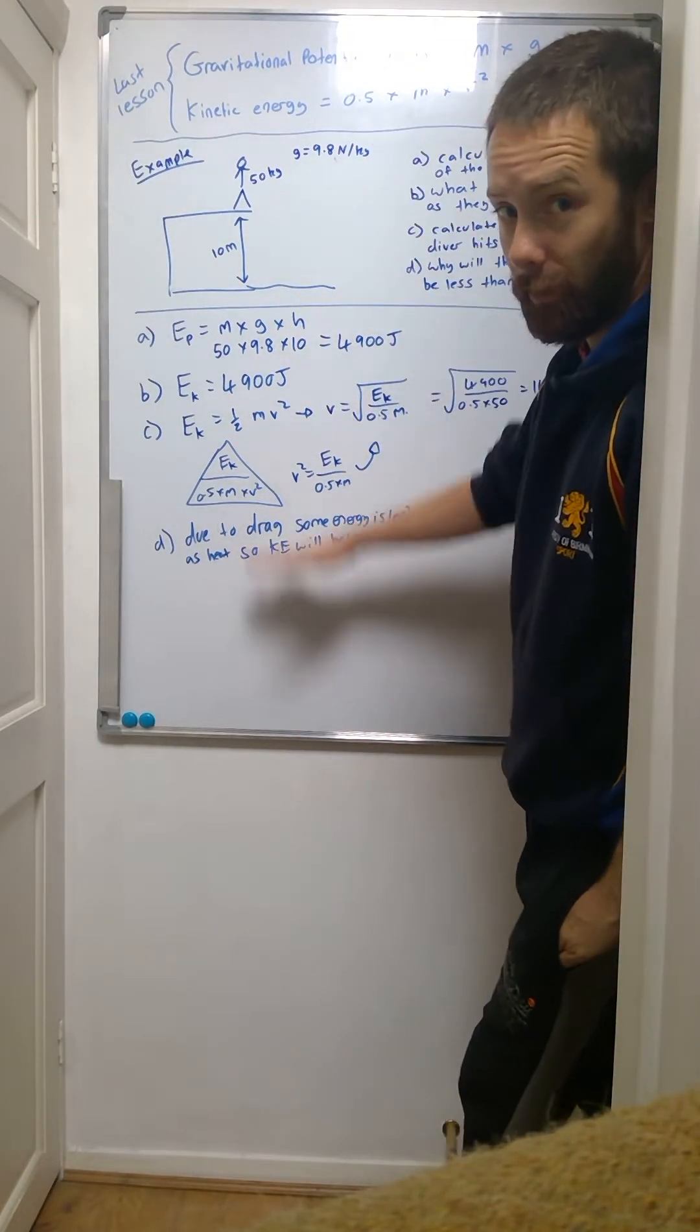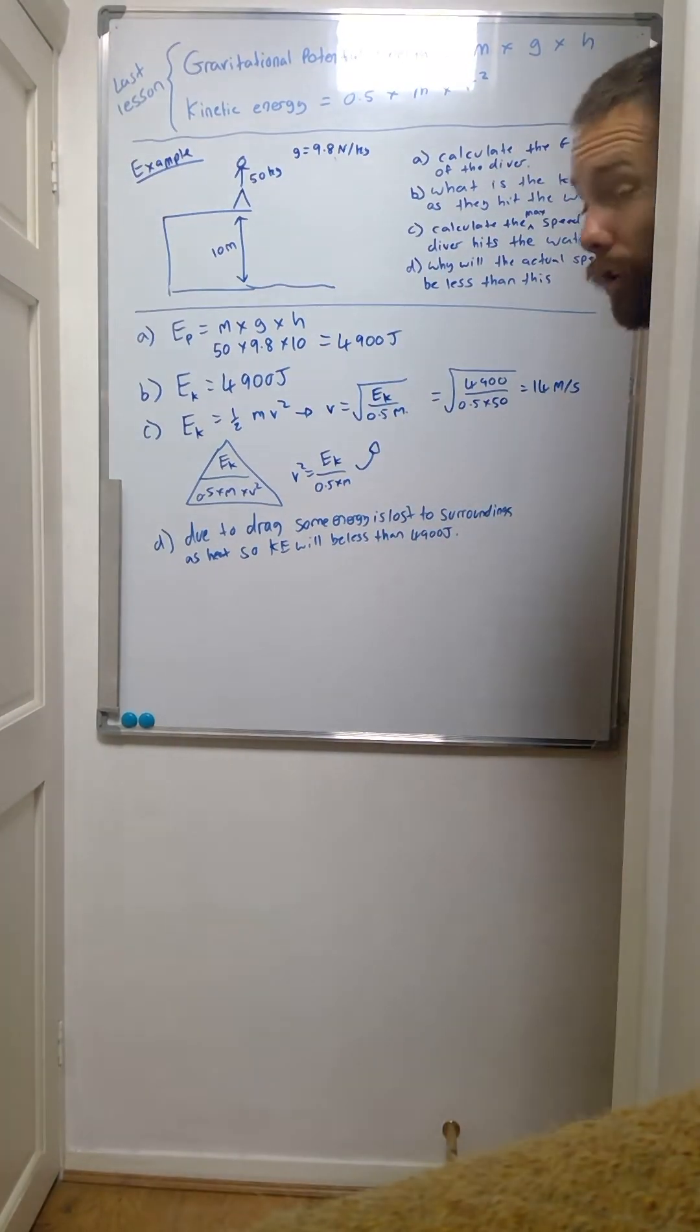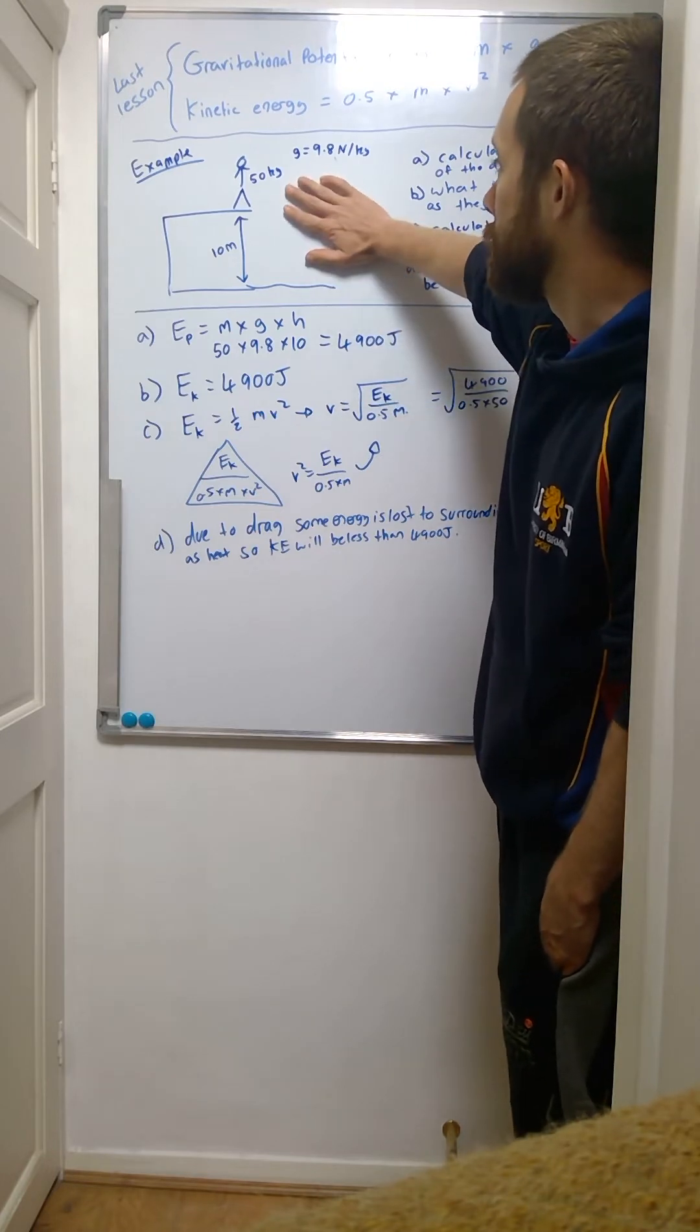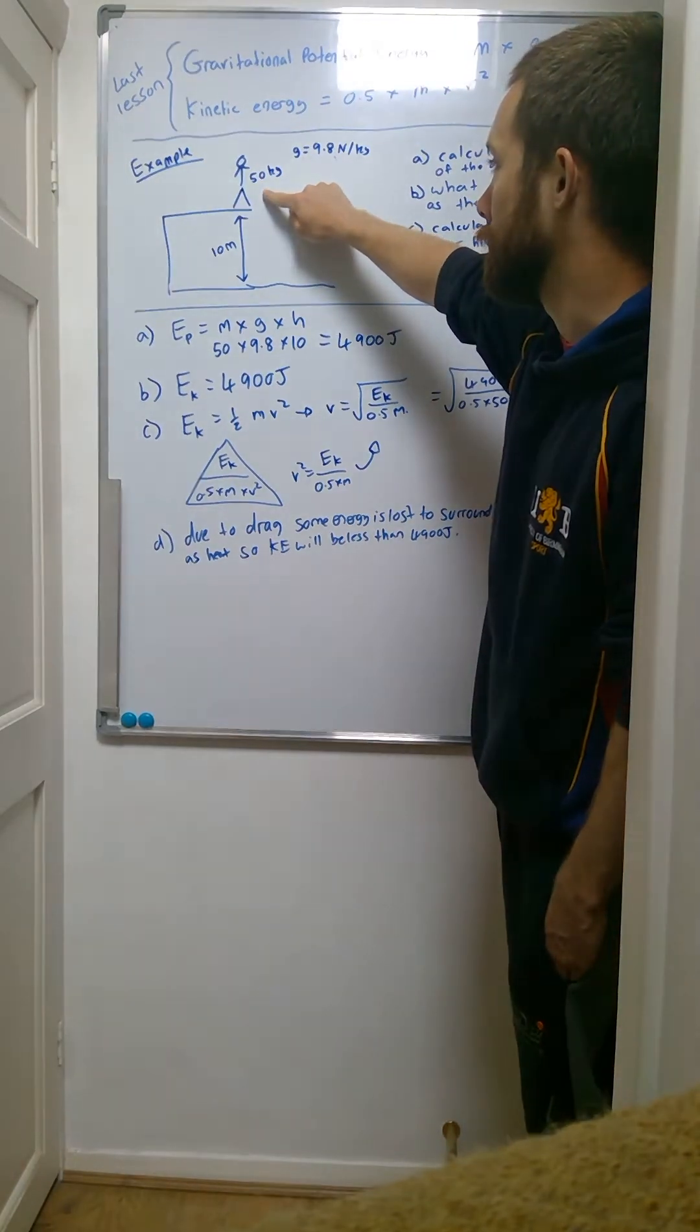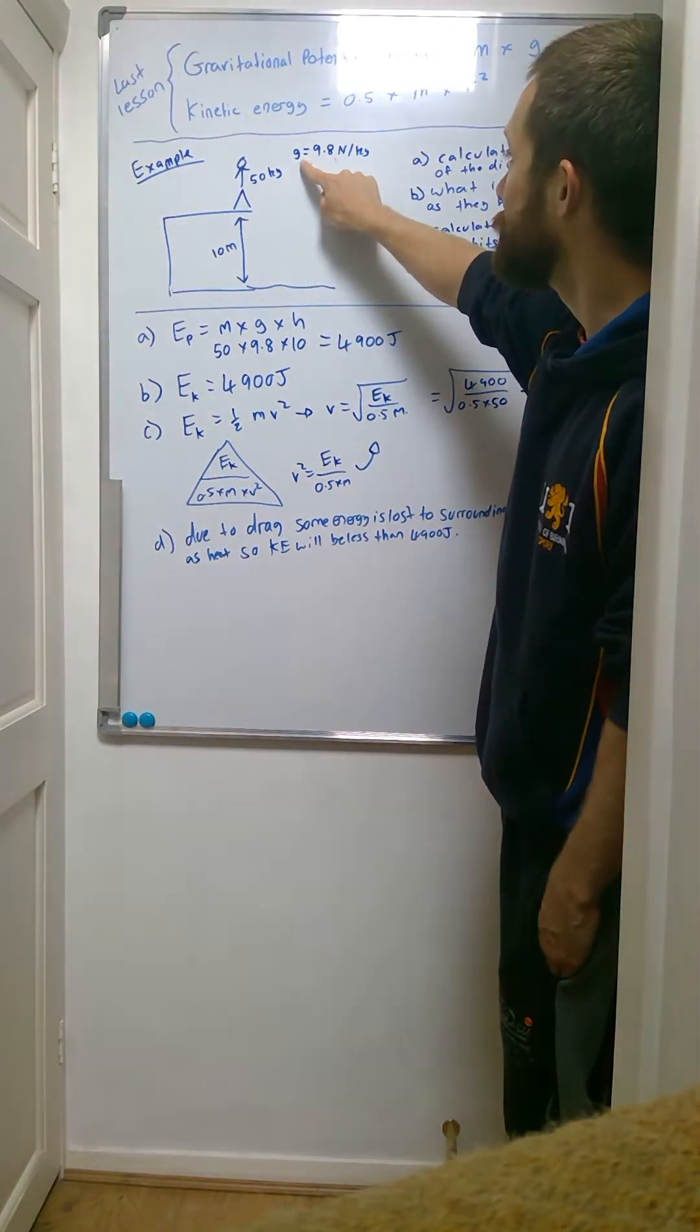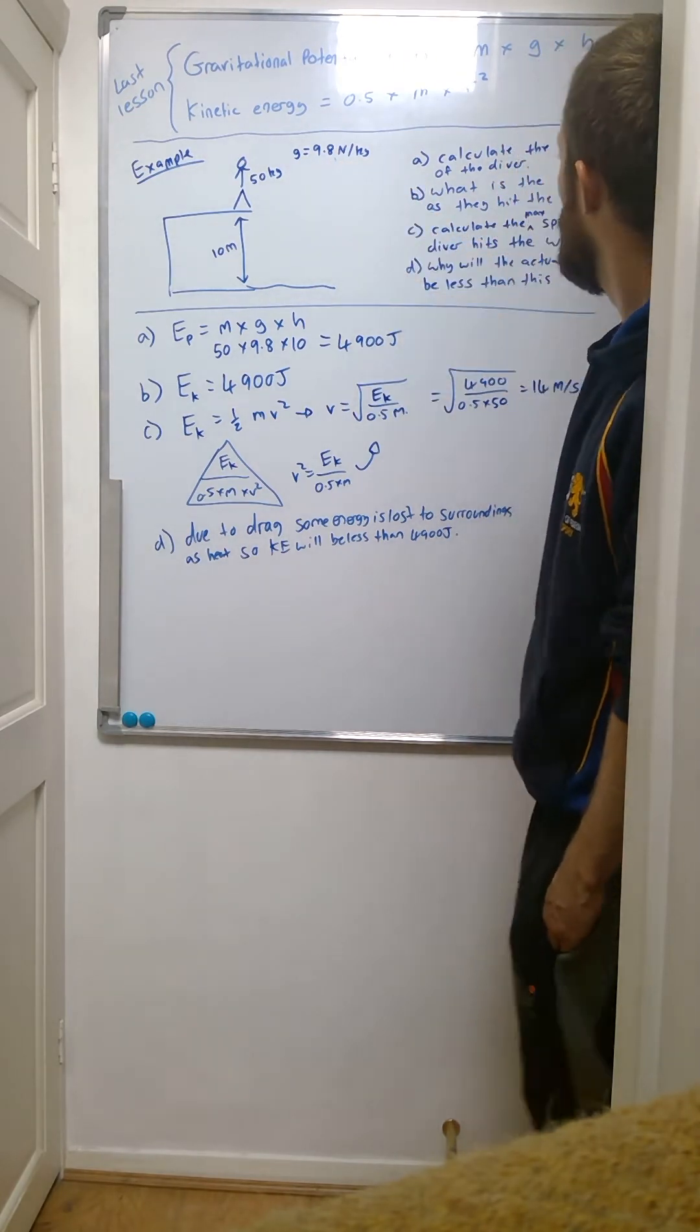Now I've already got all the answers laid out here for you, so you can see what's going on. You could probably read it yourself, but I'm going to talk you through it as well. The question is: we've got a diver doing a dive into a swimming pool. 50 kilograms, they're 10 meters above the pool, gravitational field strength is 9.8 newtons per kilogram.